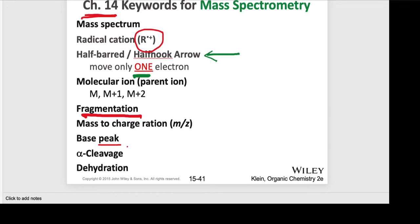It becomes more challenging when we look at specific fragmentation patterns. Those are called alpha cleavage, which can happen in alcohols as well as amines, and then also dehydration. There is also an additional fragmentation pattern called the McLafferty rearrangement, and we'll cover that in more detail when we get to carbonyl compounds in a few chapters.